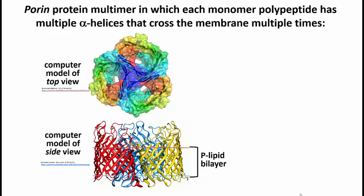A transmembrane protein need not only have a single helix. Here's an example of one, and this particular structure is typical of pores in membranes. Remember we talked about nuclear pores? There are pores in the plasma membrane and other membranes that are there to allow the flow of substances across the membrane. This is an example of how that structure would be formed.